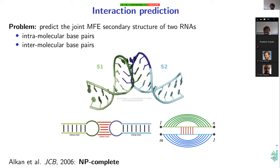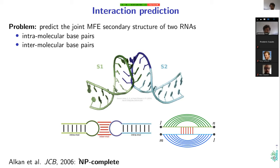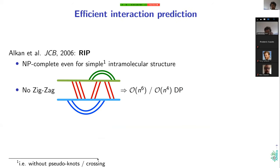In such a model, we can predict interesting conformations like kissing hairpins or more complex constructs. However, if we are completely general, this whole interaction prediction is NP-complete. This is even the case if we restrict ourselves to rather simple intramolecular structure, but still want to predict all the intermolecular base pairs that cause the interaction between our two RNAs.